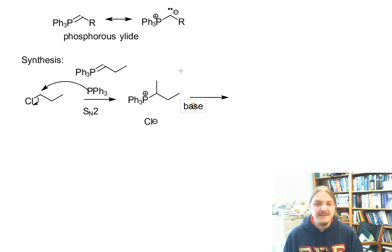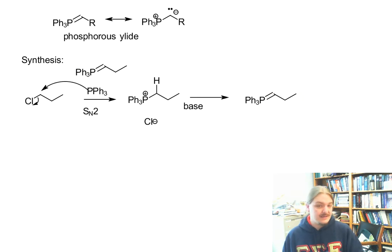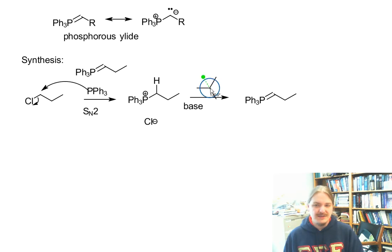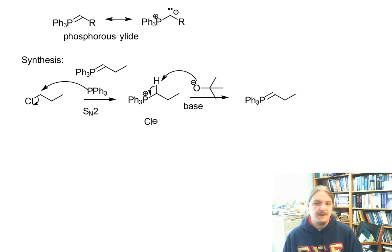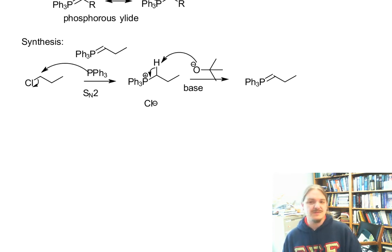The next step is to use a base, which deprotonates the hydrogen next to the phosphorus to form the ylid. There are a number of bases used — these are generally really strong bases. In my experience, potassium tert-butoxide works pretty well for the formation of some ylids. For other kinds of ylids, butyl lithium or NH2-minus type bases are used. Most alkoxides are not particularly strong enough, though tert-butoxide works for some.